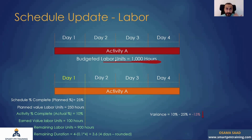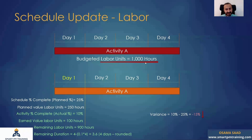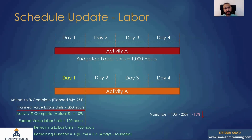Now I'll deal with the same example from a labor units perspective. We talked about why we need both cost and labor units — we need to monitor and report progress data based on both parameters. I'll have labor units overall of 1,000 hours. The planned percentage is 25%, so the planned value labor units are 250 hours — meaning 250 labor hours should have been allocated to that activity.